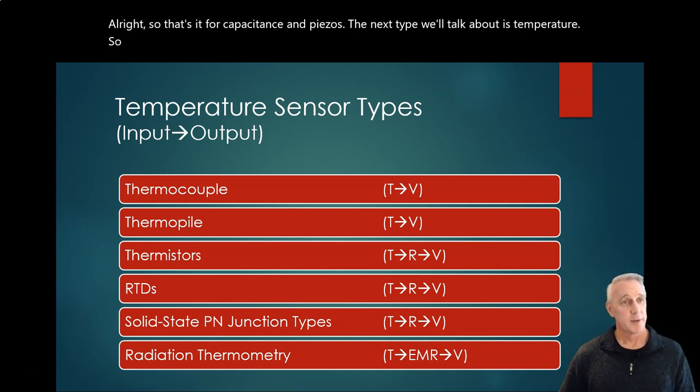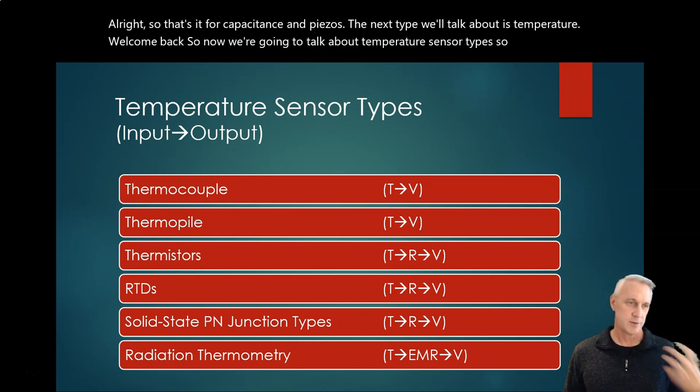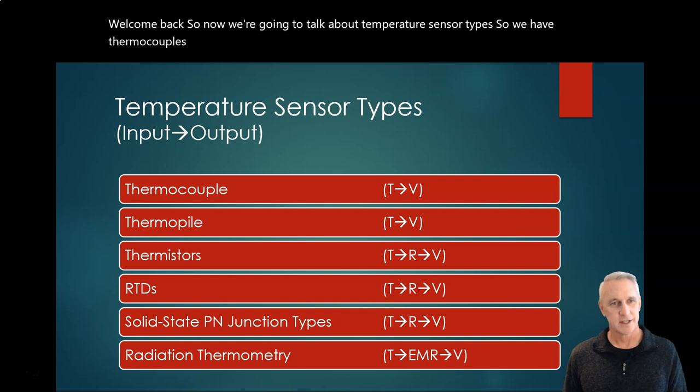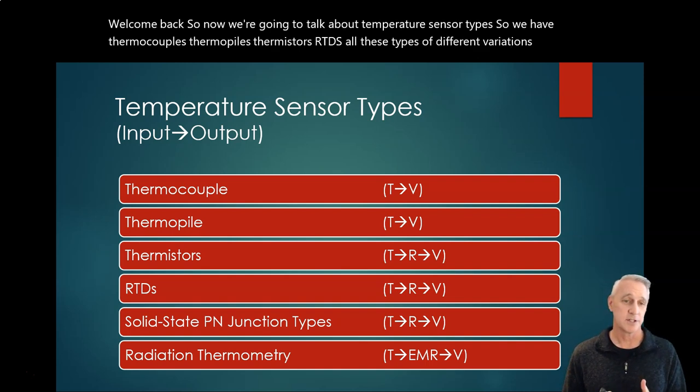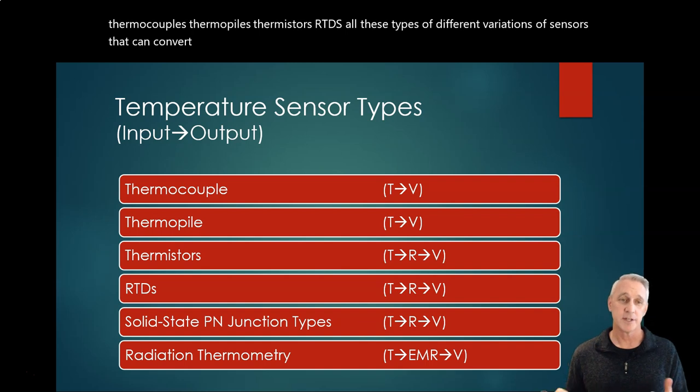Welcome back. Now we're going to talk about temperature sensor types. We have thermocouples, thermopiles, thermistors, RTDs, and all these different variations of sensors that can convert temperature into ultimately voltage.